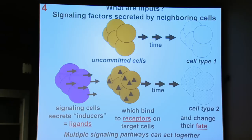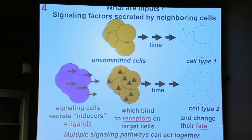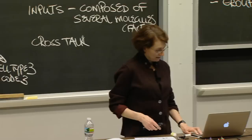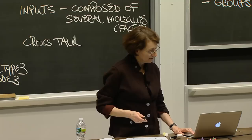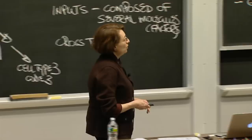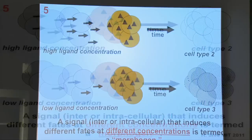Signaling pathways can act in a concentration-dependent way, as seen on the slide. A high ligand concentration gives an output of one cell type and low ligand concentration gives another. We touched on how this works molecularly previously — it's not well understood and is complicated.